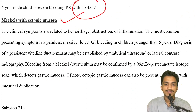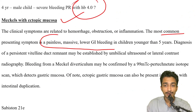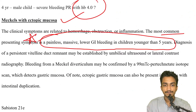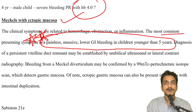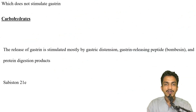Four-year-old child with severe painless PR bleeding — the answer typically points towards Meckel's diverticulum with ectopic gastric mucosa, from Sabiston. The most common presenting symptom is painless massive lower GI bleeding in a child younger than five years. If the patient presents with bleeding, it points towards ectopic gastric mucosa commonly seen in Meckel's diverticulum.